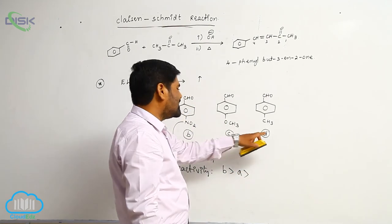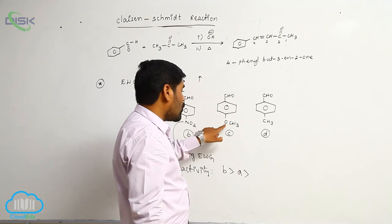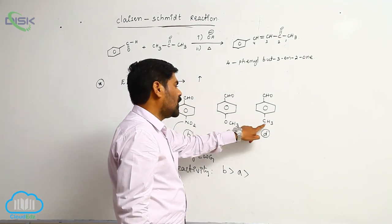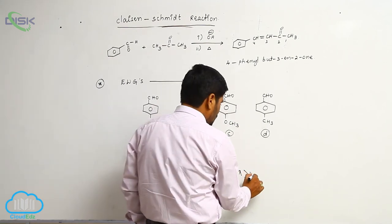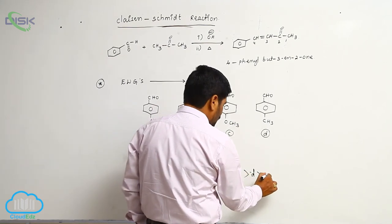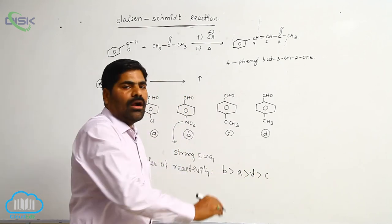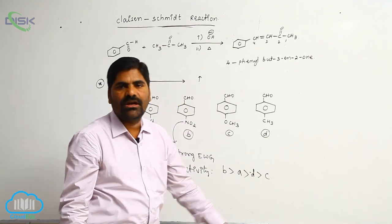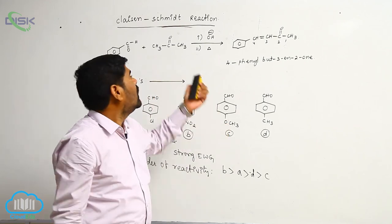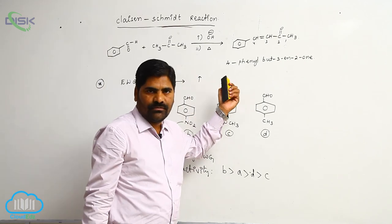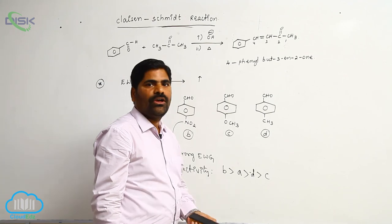Between these two, OCH3 is a strongly electron releasing group compared to methyl group. So, D is more reactive than C. This is the order of reactivity towards Claisen-Schmidt reaction.